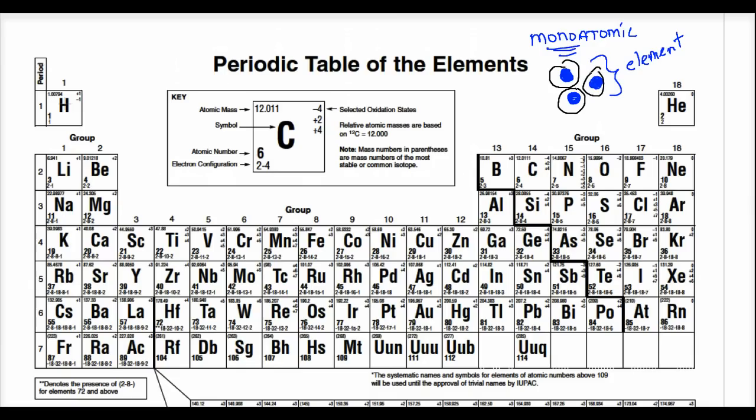Now, we have a group of elements who love to hang out by themselves, and they're right here, this last column, column 18, is called the Noble Gases. So let's write that, the Noble Gases.